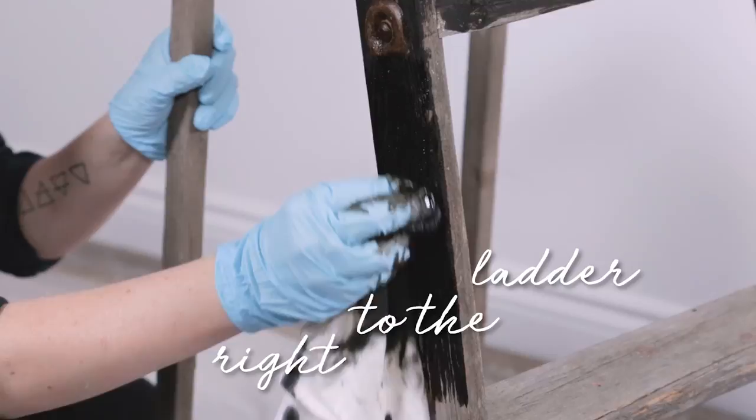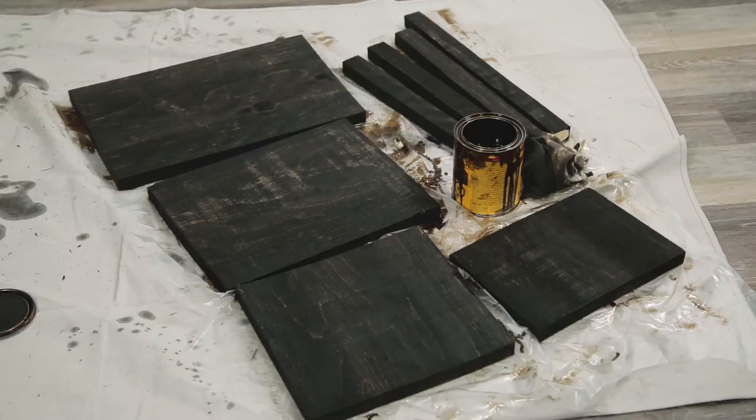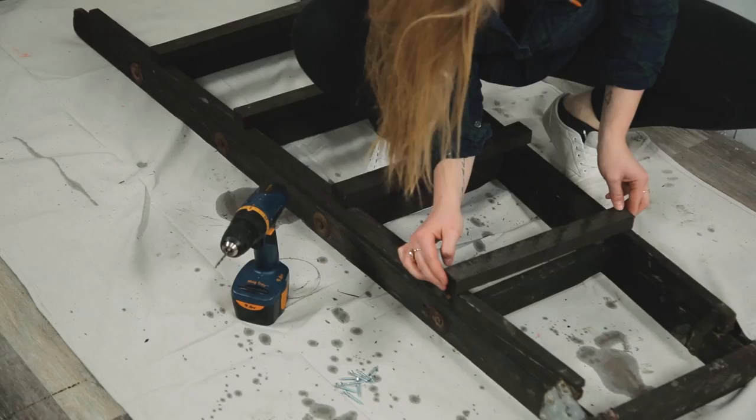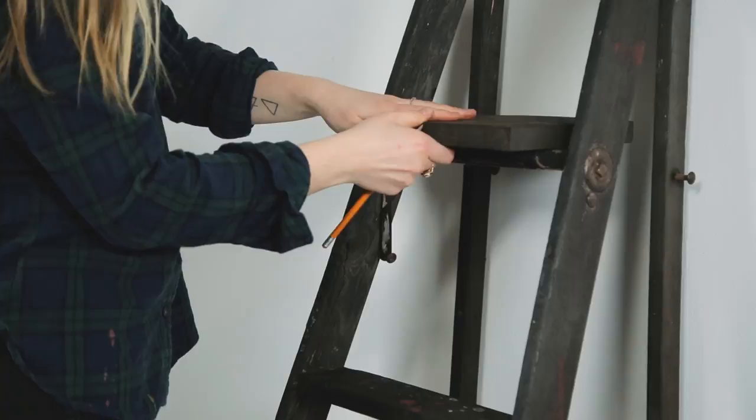Once the stain was dried, it was time to attach the back support arms. In order to determine their placements I found it easiest to set the ladder against the wall and use the boards and a pencil to mark where the board needed to sit.